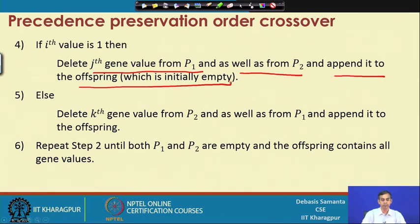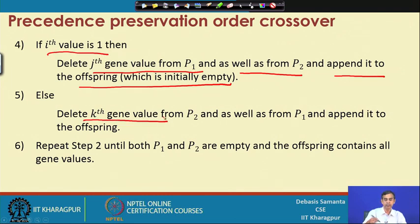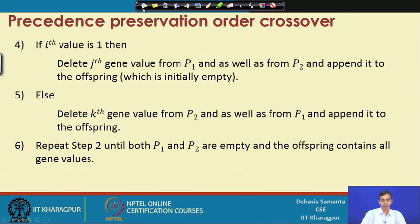We repeat this step until both P1 and P2 are empty and the offspring contains all gene values. Essentially, whatever 1 or 2 indicates, we delete from P1 or P2 and copy into the offspring. Let us explain this concept with an example.